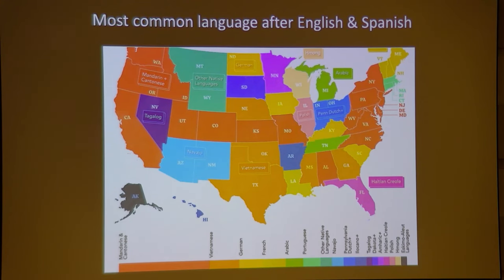This is fascinating — the most common language after English and Spanish in every state. Mandarin and Cantonese covers a lot of states, Vietnamese, German, French, Arabic. It's really fascinating to see that this is a nation of so many languages.